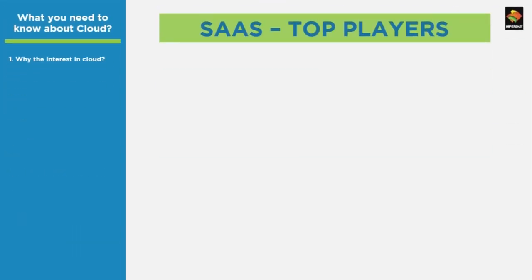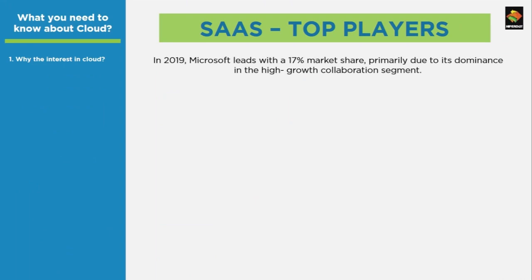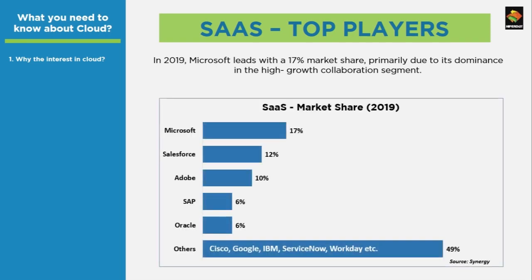Microsoft, due to its Office 365 and Teams products, dominates the SaaS market. It is followed by Salesforce and Adobe, as they also have office and productivity applications.